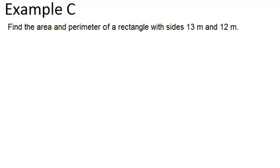In example C, it says find the area and perimeter of a rectangle with sides 13 meters and 12 meters.